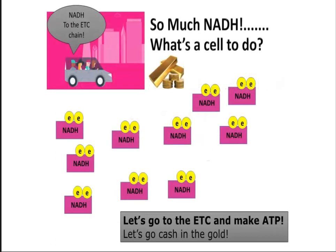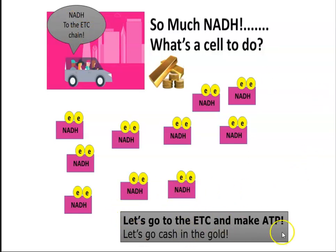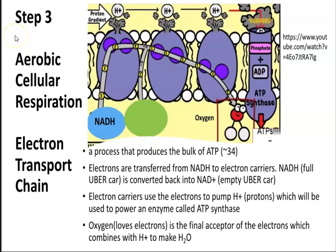We talked previously about cellular respiration and the products of cellular respiration — specifically from glycolysis as well as the citric acid cycle — are these molecules of NADH. We have so much NADH. So from those other processes, we have all this NADH and we go to the electron transport chain.